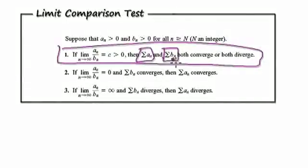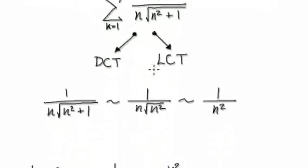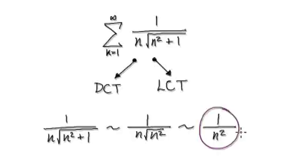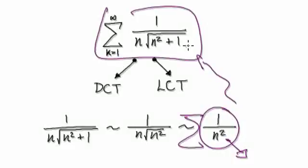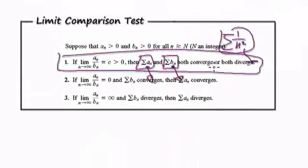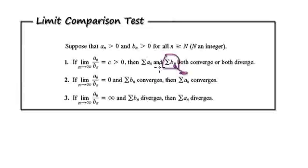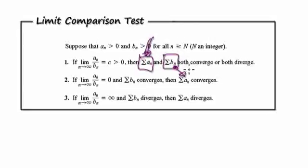We know that 1 over n squared — our b_n — is going to converge. Therefore our a_n must also converge. To recap: b_n is 1 over n squared and we know it converges. We're trying to investigate a_n, which we know nothing about. But since b_n converges and the limit comparison test says both must converge or both must diverge, this thing must also converge.